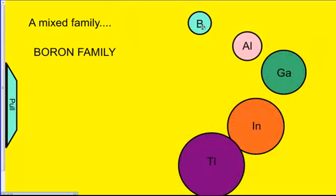In this family we have boron, aluminum, gallium, indium, and thallium.